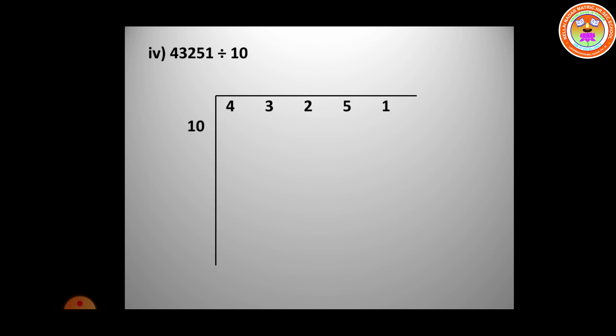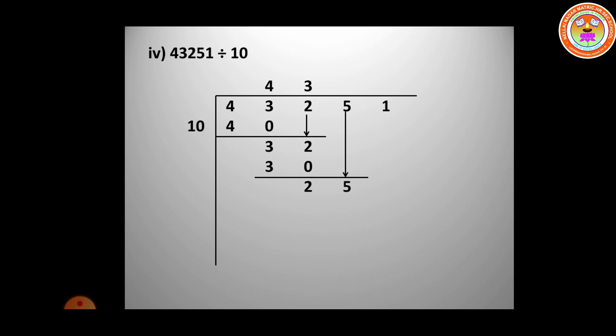The next question is 43,251 divided by 10. Since 4 is less than 10, take 43. Four 10's are 40, remainder 3. Bring down — 32. Three 10's are 30, remainder 2. Bring down — 25. Two 10's are 20, remainder 5. Bring down — 51. Five 10's are 50, remainder 1. The quotient is 4325 and the remainder is 1.